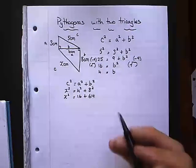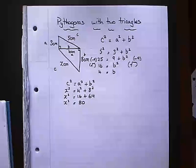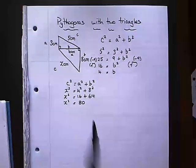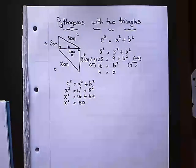Add the two together. X squared equals 80. That's just below a square number. 9 times 9 is 81. So 80 is not a square number. So I'm going to use my calculator for this.